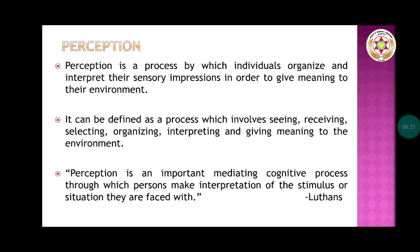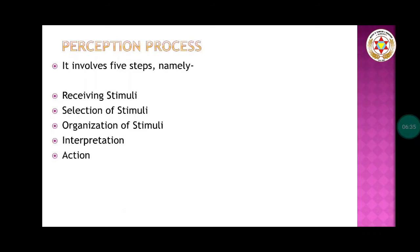Perception is an important mediating cognitive process through which people make interpretations of the stimulus or situation they are faced with, as defined by Luthans. The perception process involves five major steps: receiving stimuli, selection of stimuli, organizing of stimuli, interpretation, and action. The perception process starts with the receiving of stimuli from various sources — through the five senses: seeing objects, smell, taste, and touch.